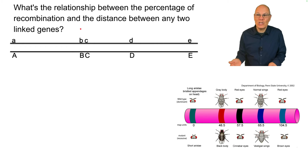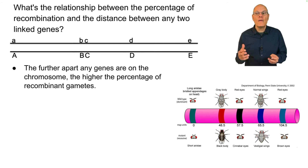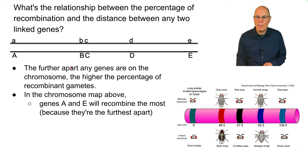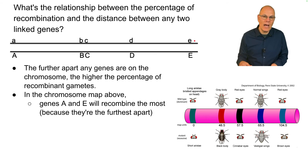What's the relationship between the percentage of recombination and the distance between any two linked genes? The further apart any genes are on the chromosome, the higher the percentage of recombinant gametes. In the chromosome map, genes A and E will recombine the most because they're the furthest apart — crossing over can occur at many positions, causing alleles to swap, which almost looks like independent assortment.